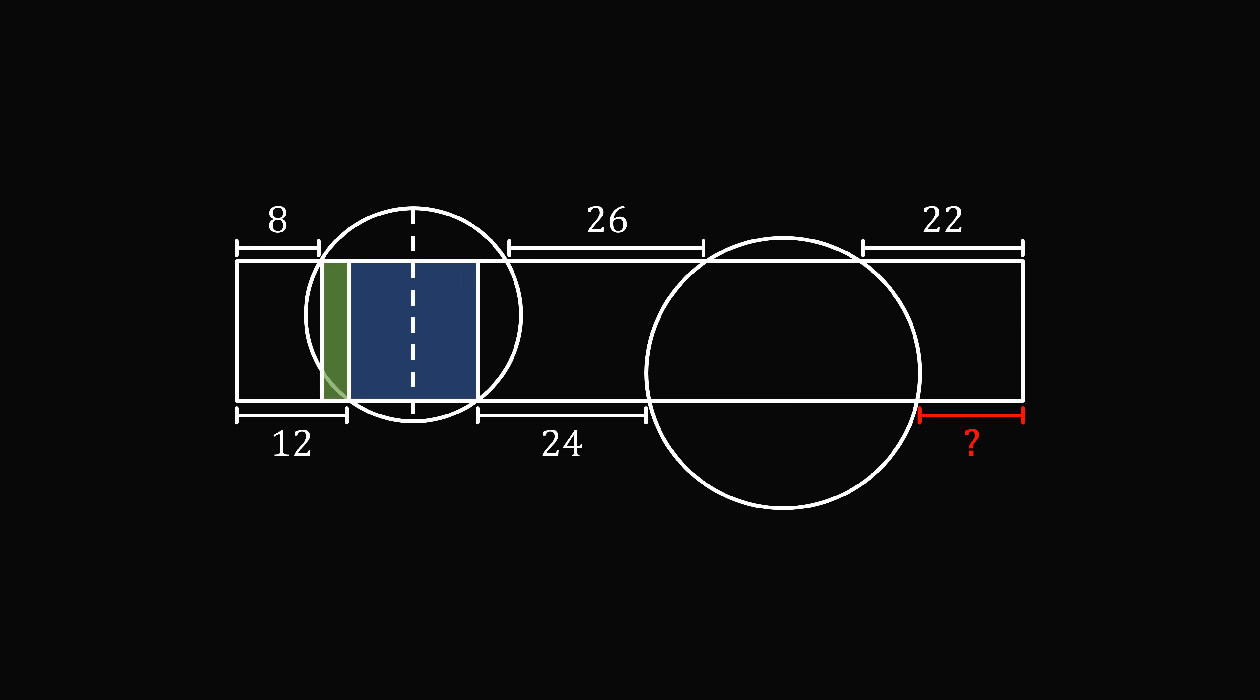So, if we construct this rectangle on the left side of the circle, we know that one of its lengths will be equal to 12 minus 8, which equals 4. By symmetry, we can exactly translate this over to the right side of the circle. This length will also be equal to 4.